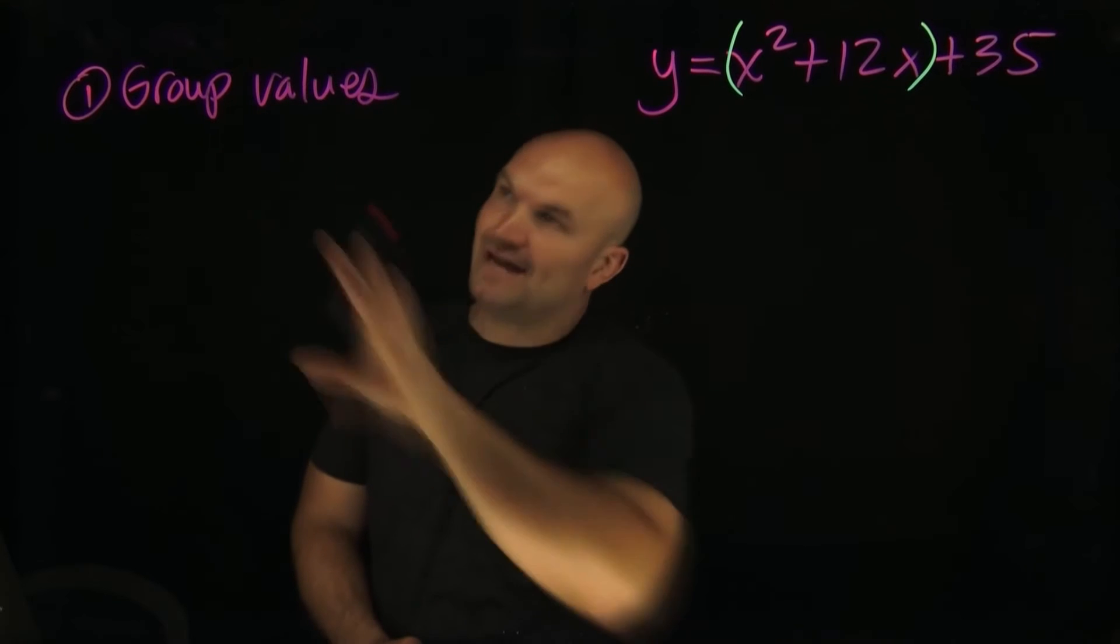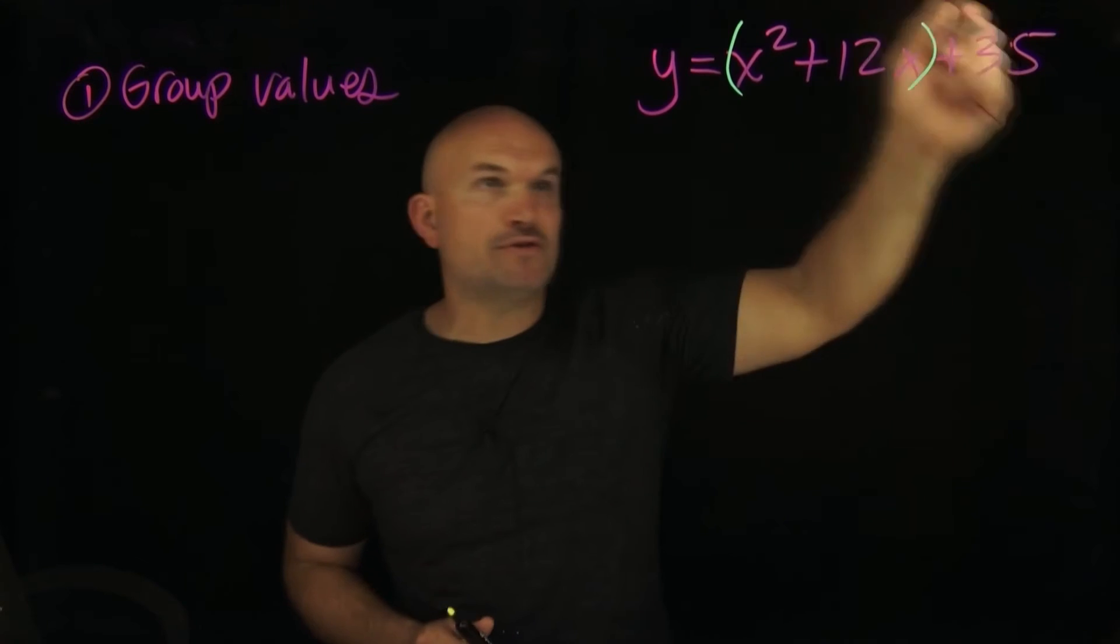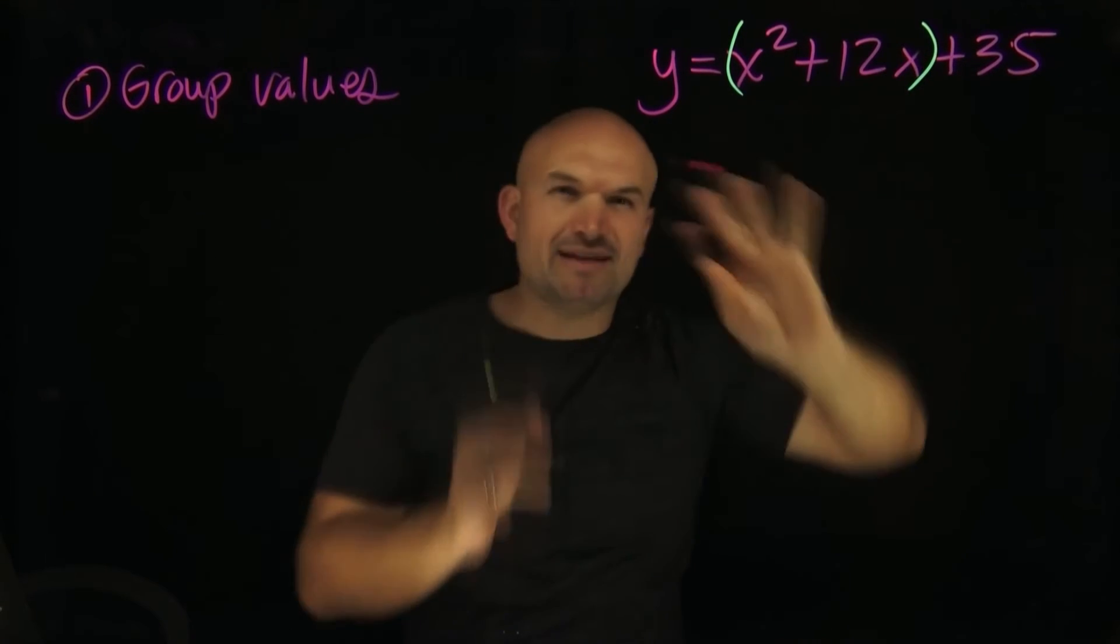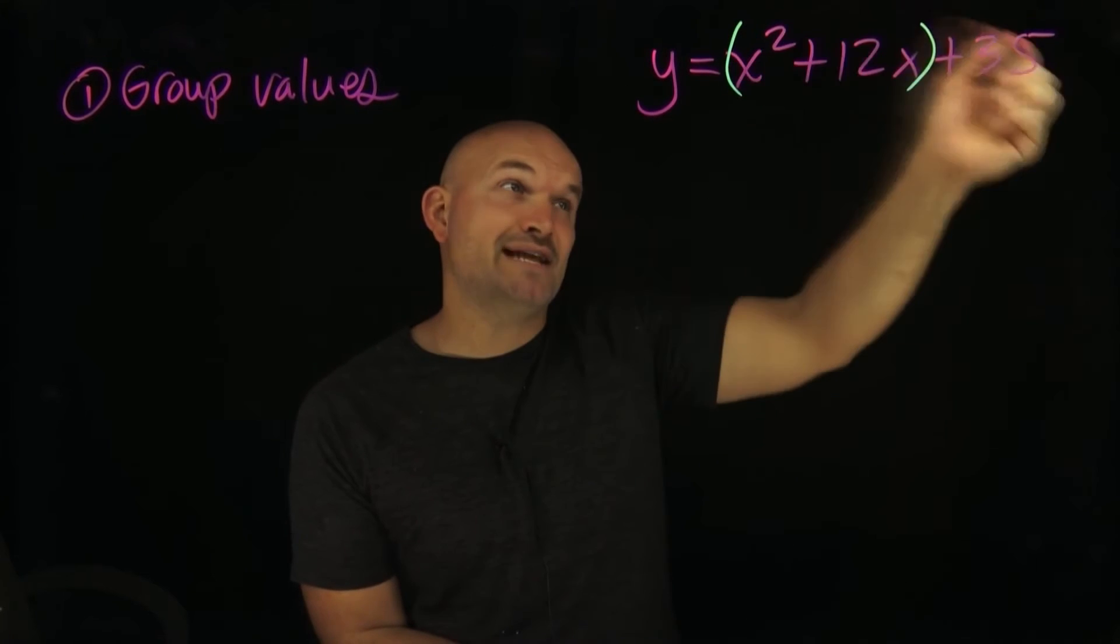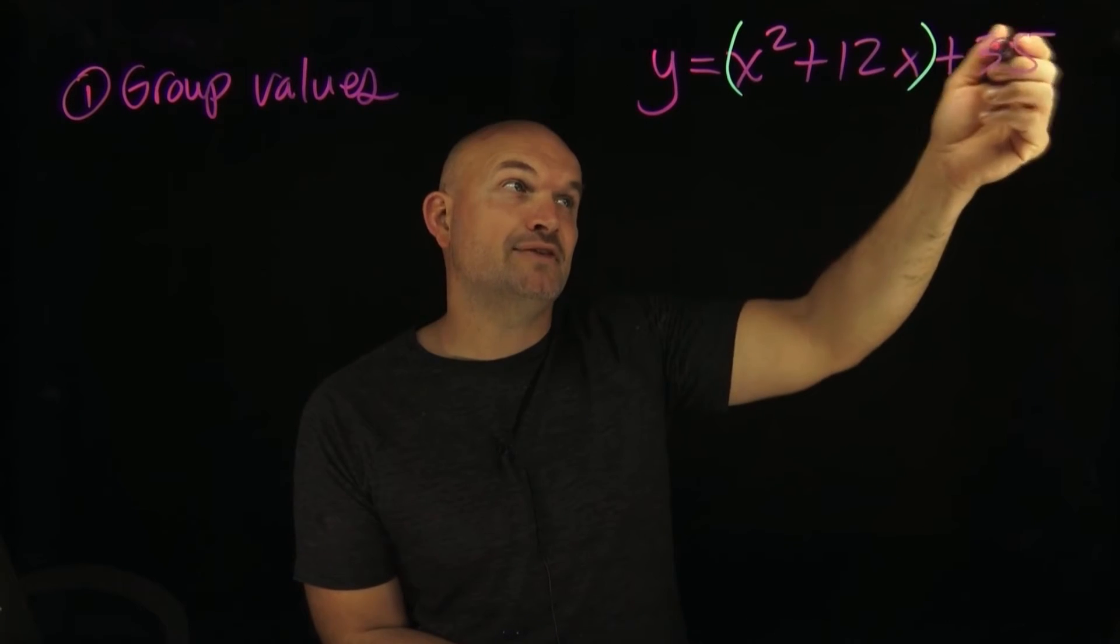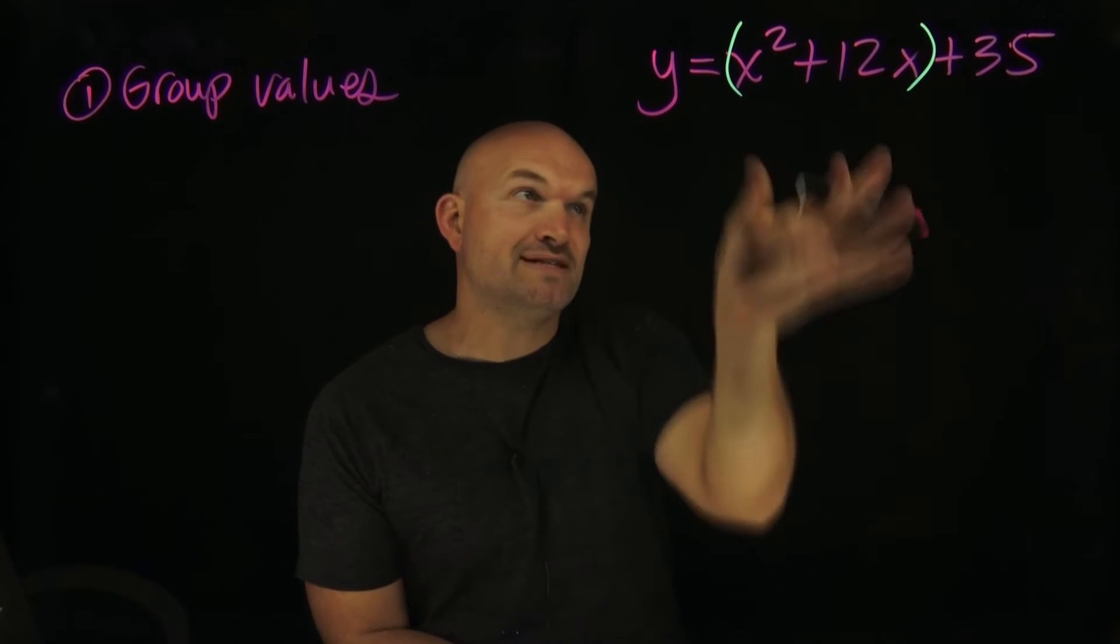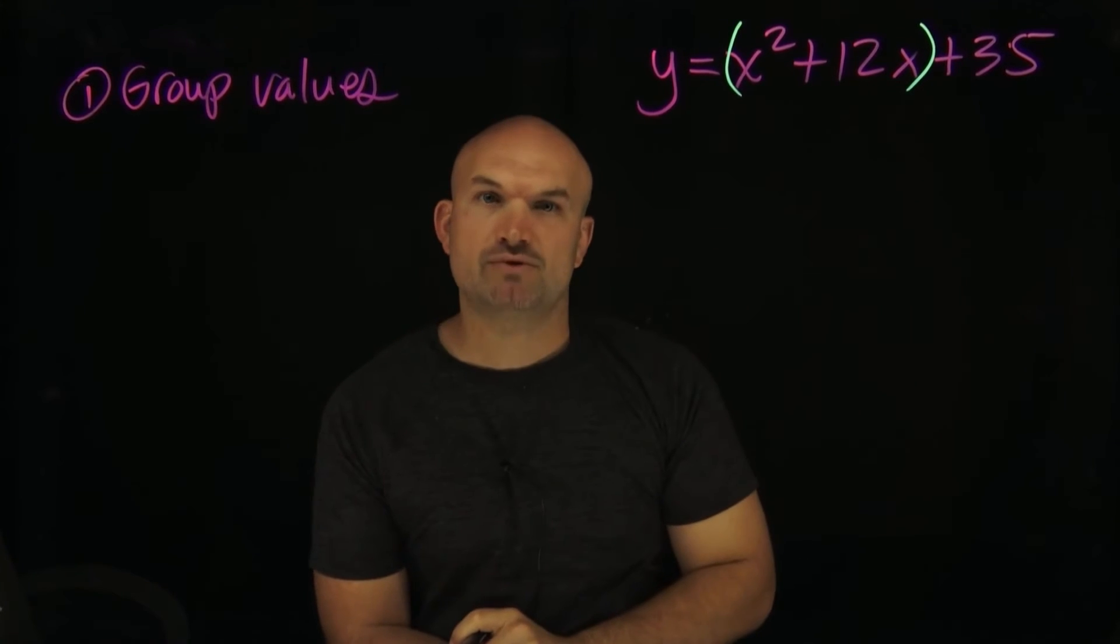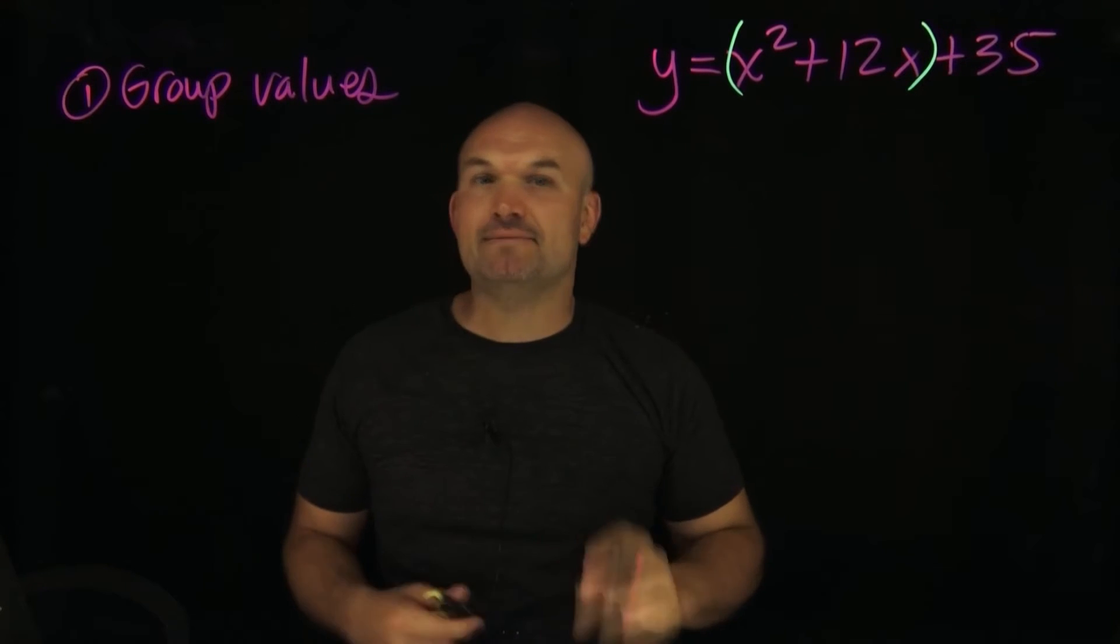One thing I didn't mention is sometimes you'll have a quadratic that's maybe not already written in standard form. You'll have the 35 over here or everything will be rearranged, your teacher will try to trick you. So just make sure you have it in descending order: x squared, x and then 35, and then group those first two terms. Because this is what we're trying to create our perfect square trinomial. This is where we're going to create that value that's going to be the binomial squared.